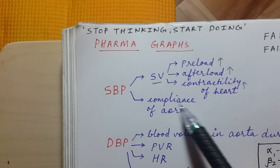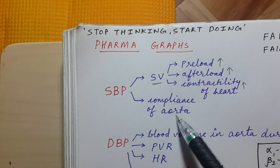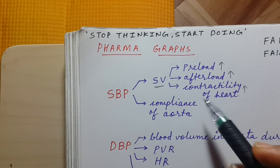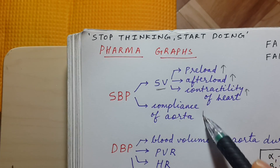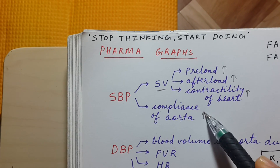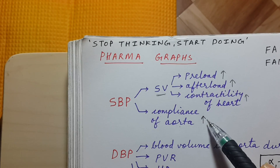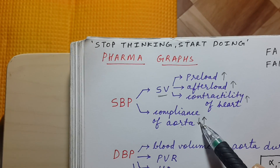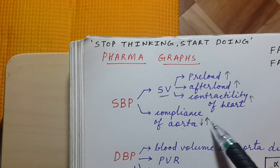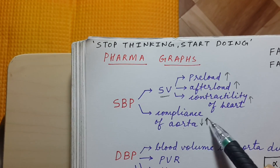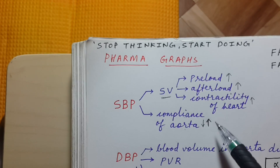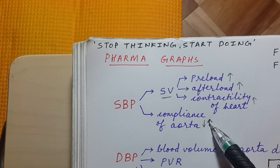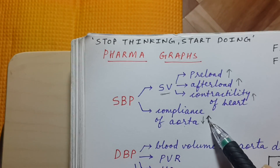The second factor is compliance of the aorta. If compliance is less, then systolic blood pressure will increase. If compliance is high, then systolic blood pressure will decrease.